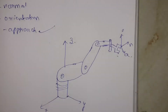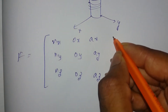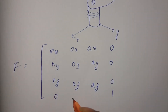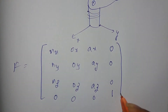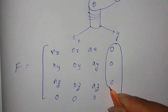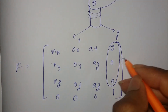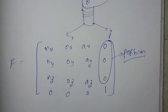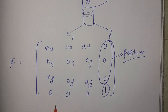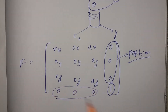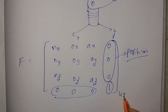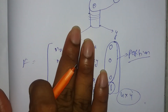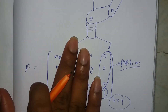Now we can see the bottom row is 0, 0, 0, 1, which represents the position. The origin position is 0, 0 and this is the scale factor. This is the homogeneous matrix — it is 4x4. This is the representation of a frame at the origin of a fixed reference frame.